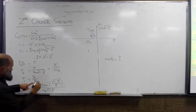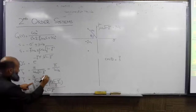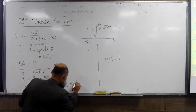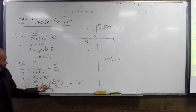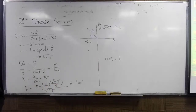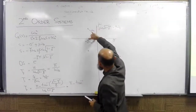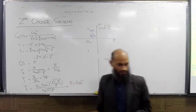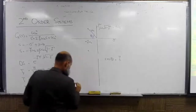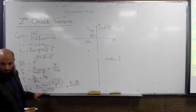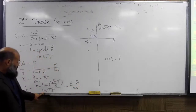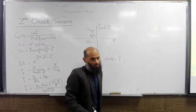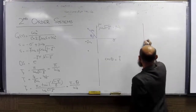Settling time is equal to 4 over sigma. And the rise time expression involves pi minus the inverse tangent of omega_d over sigma. Omega_d is omega_n multiplied by the square root of 1 minus zeta squared. That is omega_d — the damped frequency of oscillation.